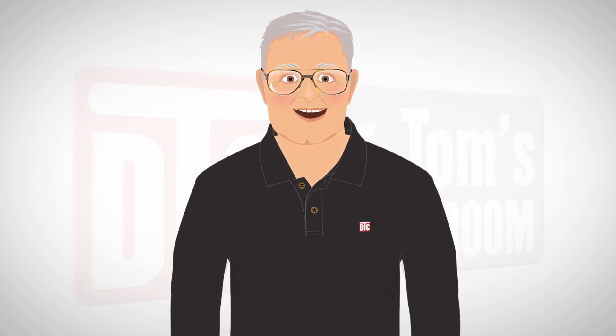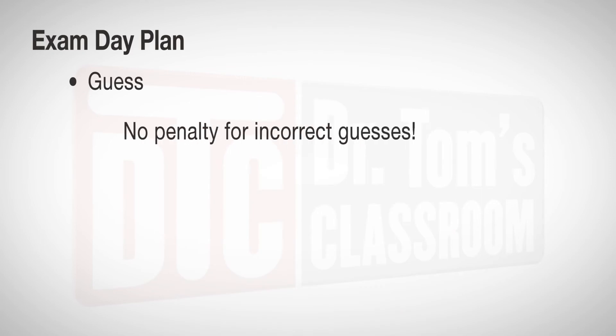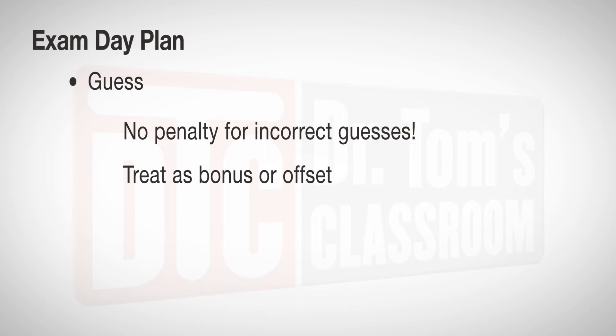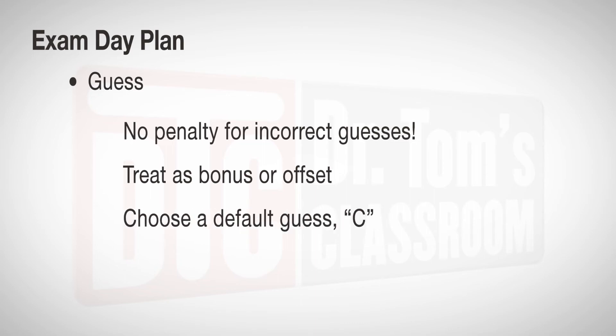Always check to make sure that you have an answer for every problem before time runs out. There is no penalty for incorrect guesses, so guessing should definitely be a part of your exam day plan, but not as part of achieving the points needed to pass. You should treat successful guessing as a bonus or an offset for problems you should have gotten right but missed a step and got the wrong answer. Statistically, guessing should give 25% correct answers, but only if A, B, C, D are equally distributed — they most likely are not. So choose a default guess and stick with it. Based on the NCEES practice exam answer distribution, the best default guess would be C.